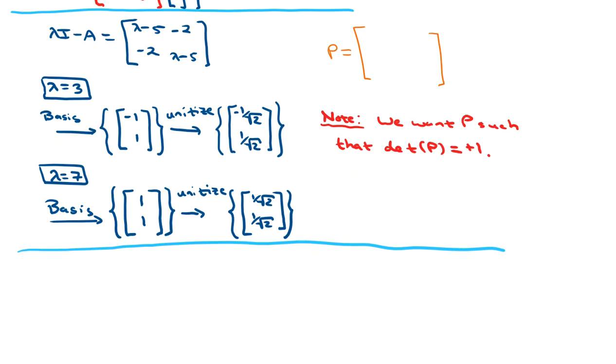The way to do that is to let the basis vector for lambda = 7 be P sub 1, and let the basis vector for lambda = 3 be P sub 2. I'm going to go ahead and populate those into the columns of our orthogonal matrix P. So the first column is 1 over the square root of 2, 1 over the square root of 2. And the second column is negative 1 over the square root of 2, 1 over the square root of 2.